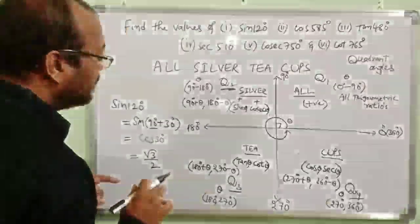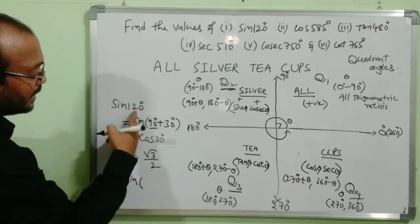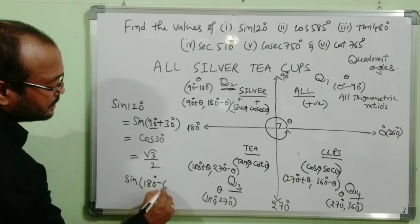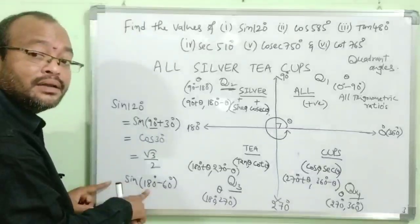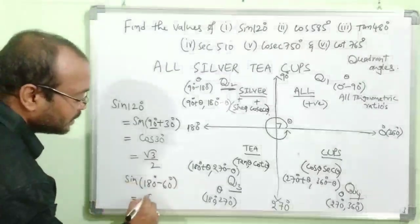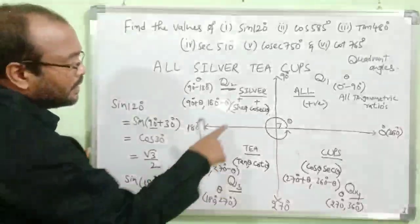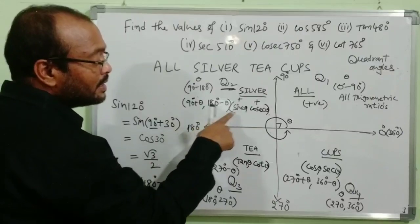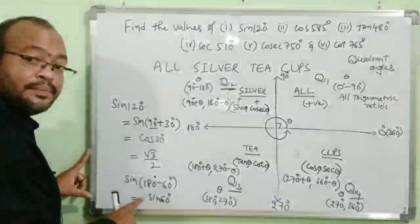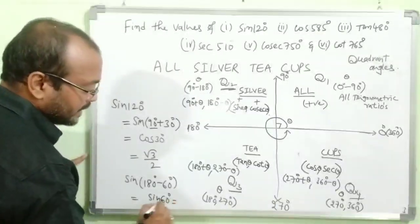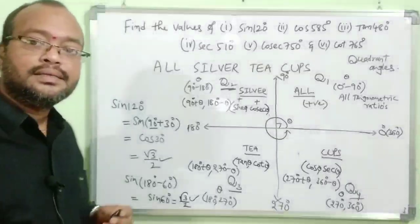Alternatively, sin 120 can be written as sin(180 − 60). Since 180 is an even multiple of 90, there is no change in the function — sin remains sin. So we get sin 60. The angle 180 minus theta is in the second quadrant, where sine is positive. Therefore sin(180 − 60) = sin 60 = √3/2. In both cases we get the same answer: √3/2.